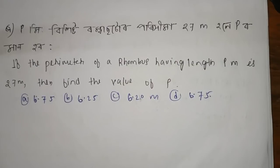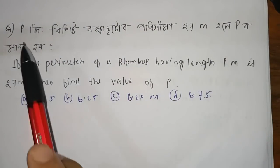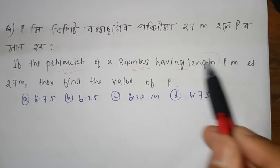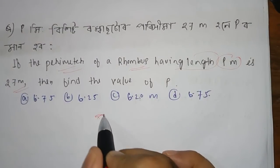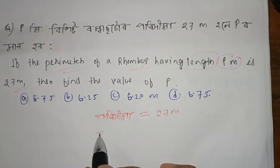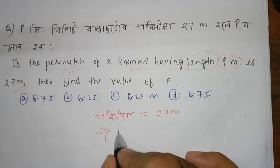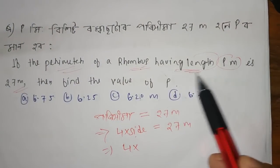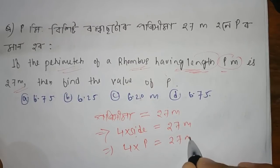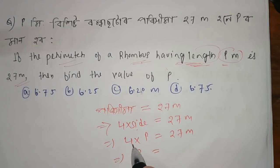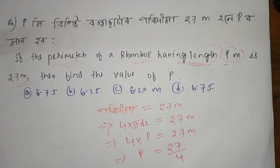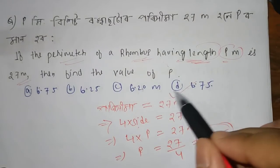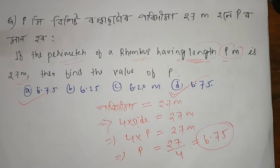The next question: if the perimeter of a rhombus having side length p meters is 27 meters, find the side. The perimeter of a rhombus is 4 times the side. So 4 times side equals 27. Dividing, 4a equals 6.75. This is the correct answer — option D.